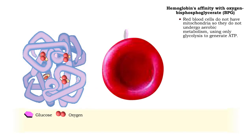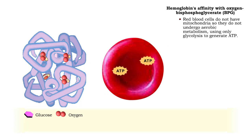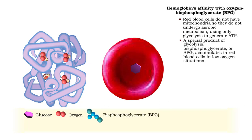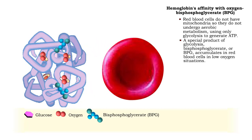Red blood cells do not have mitochondria, so they do not undergo aerobic metabolism, using only glycolysis to generate ATP. Bisphosphoglycerate, or BPG, a special product of glycolysis, accumulates in red blood cells in low oxygen situations.